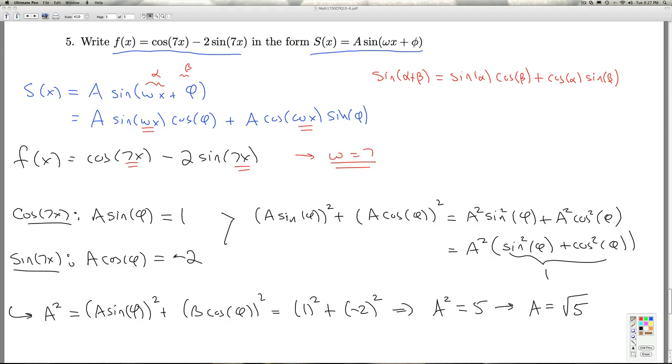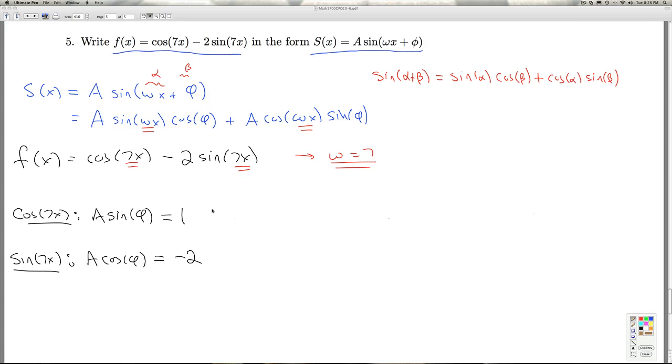Now that I know what A is, I can go back to these equations to determine what the φ is. So now I know that A is square root 5. So this equation becomes square root 5 sine φ is 1. And this equation becomes square root 5 cosine φ is negative 2. So if I solve these for the trig function, I get sine φ is 1 over radical 5, or radical 5 over 5. And then cosine φ is negative 2 radical 5 over 5.